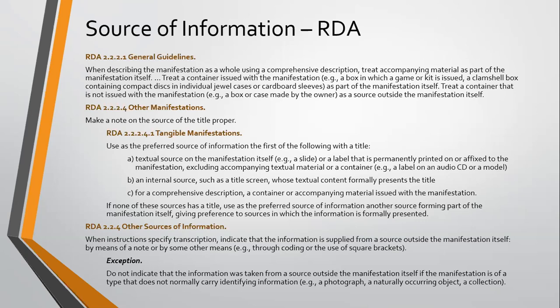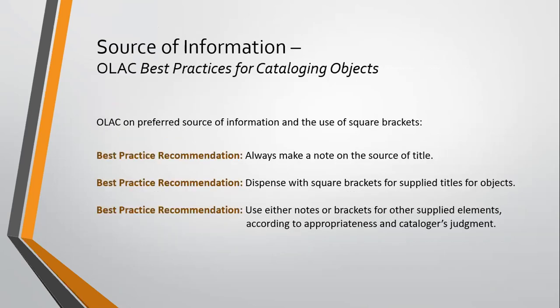When we take information from an outside source for elements that require transcription — when we say we're supplying information, not transcribing it — RDA says we need to specify this by providing a note or by using square brackets. There is an exception: do not indicate information was taken from a source outside the manifestation if the manifestation is of a type that does not normally carry identifying information — such as a photograph or naturally occurring object. These guidelines are not specific to 3D objects only, but will come up often with them.